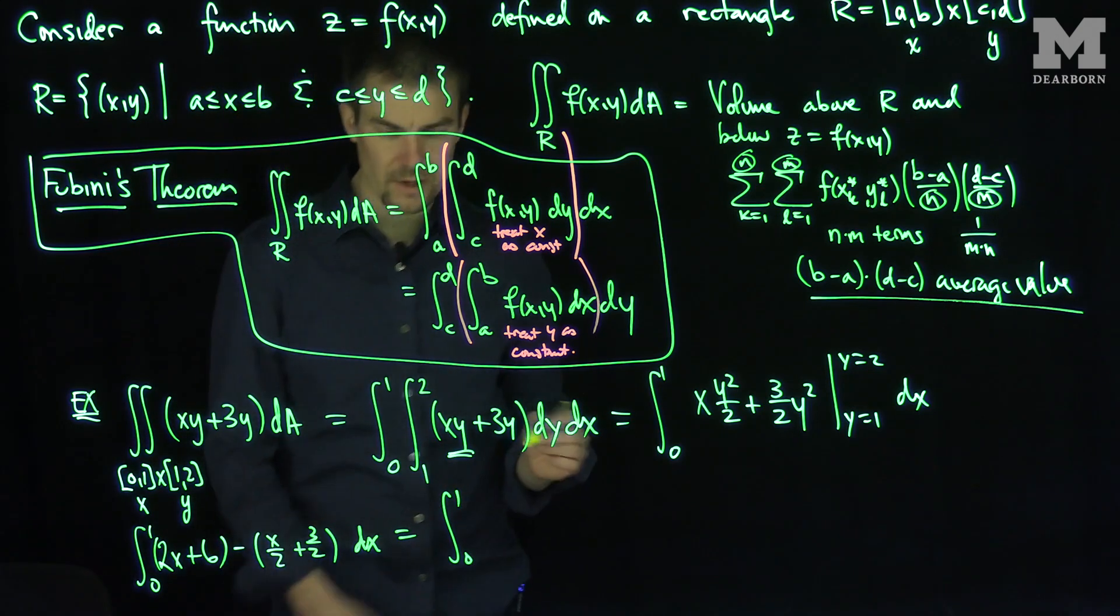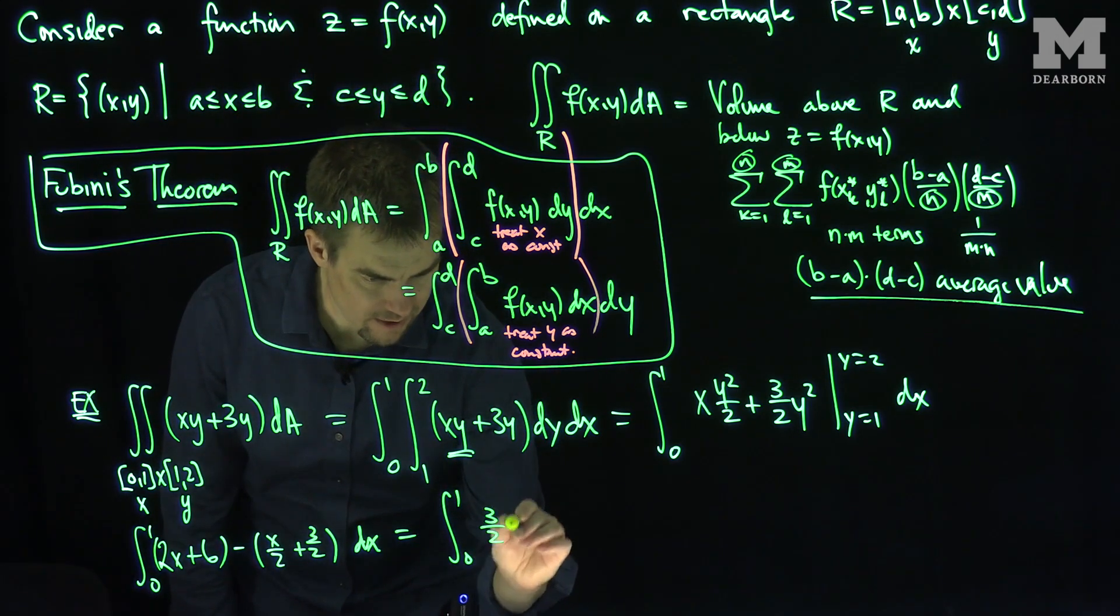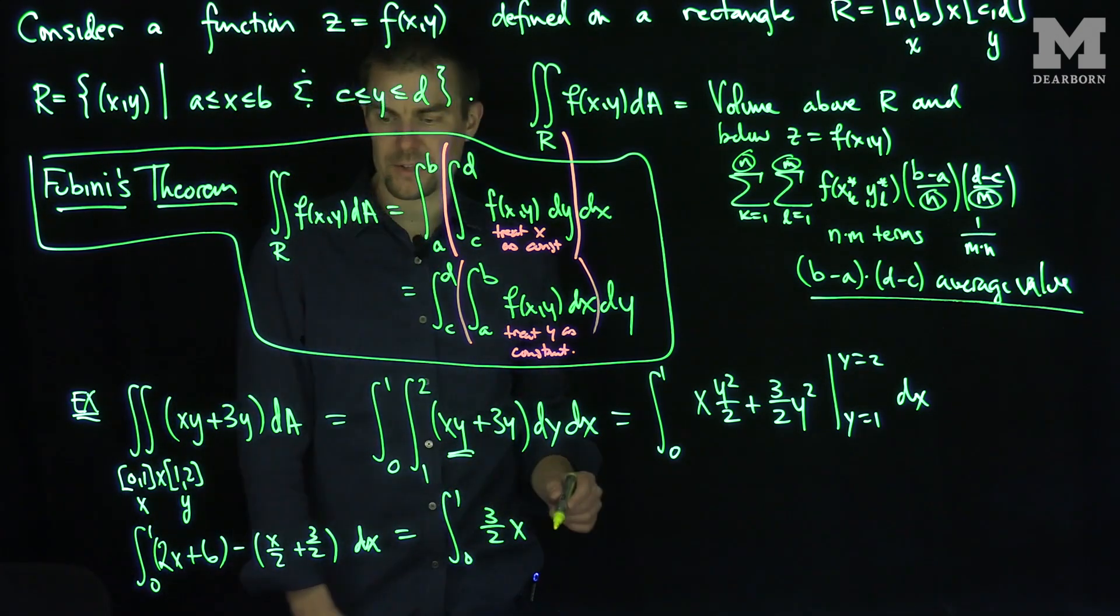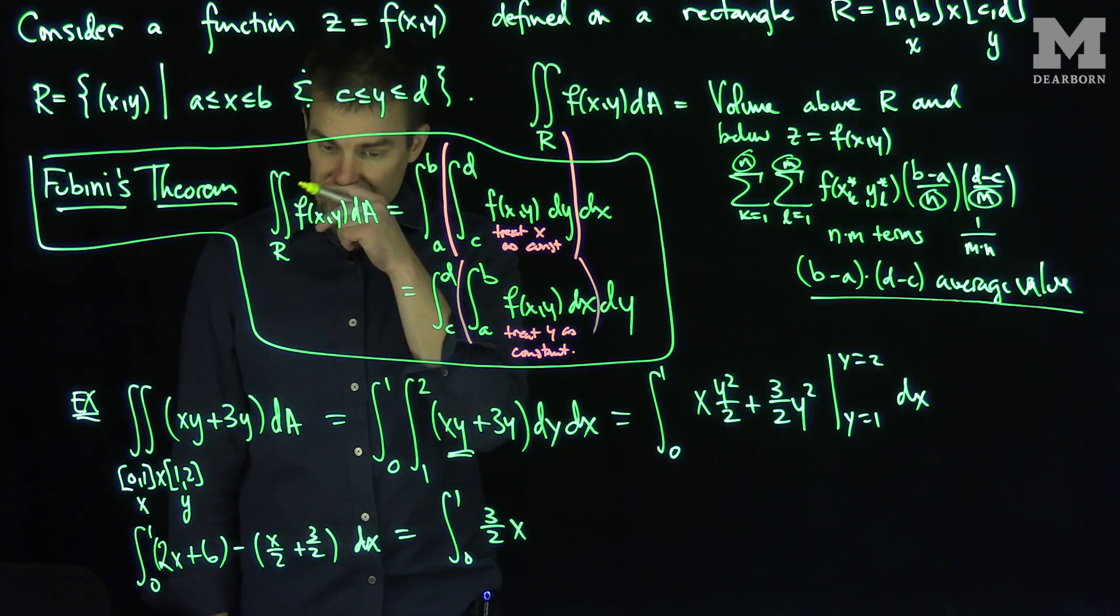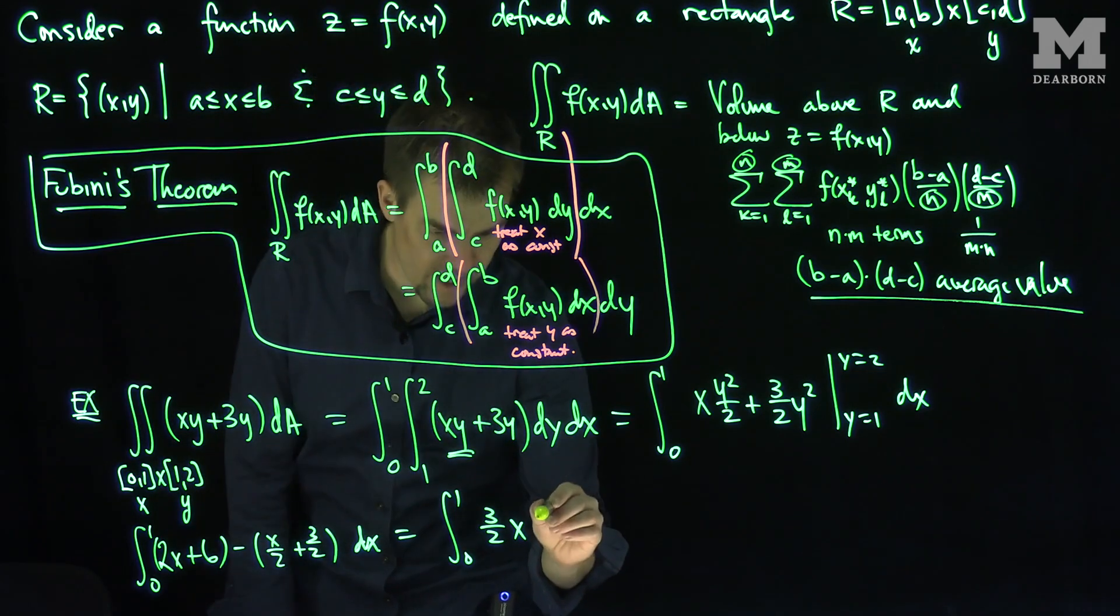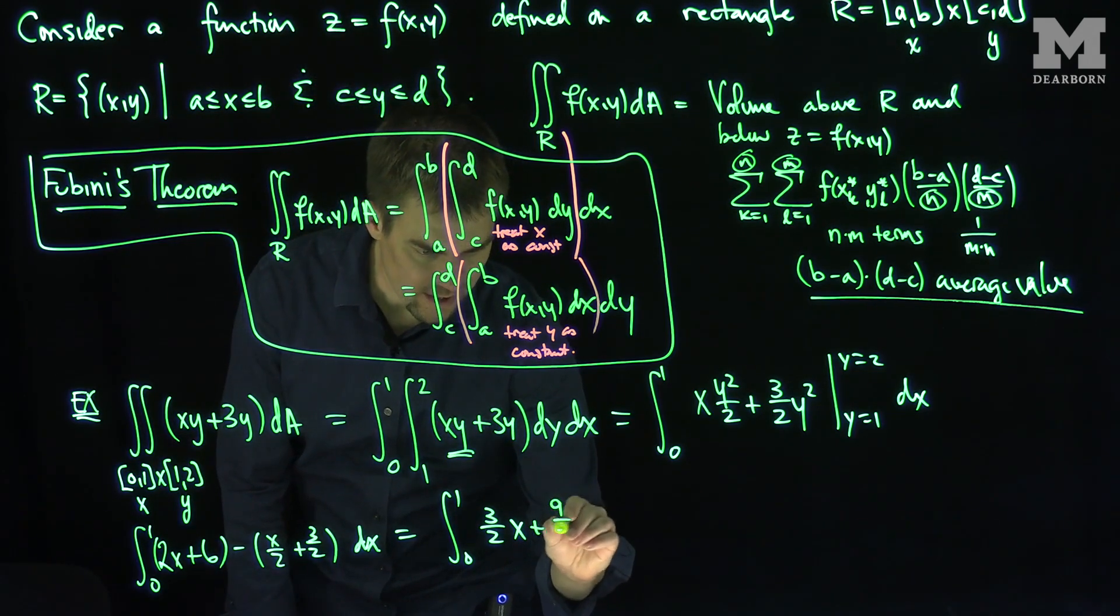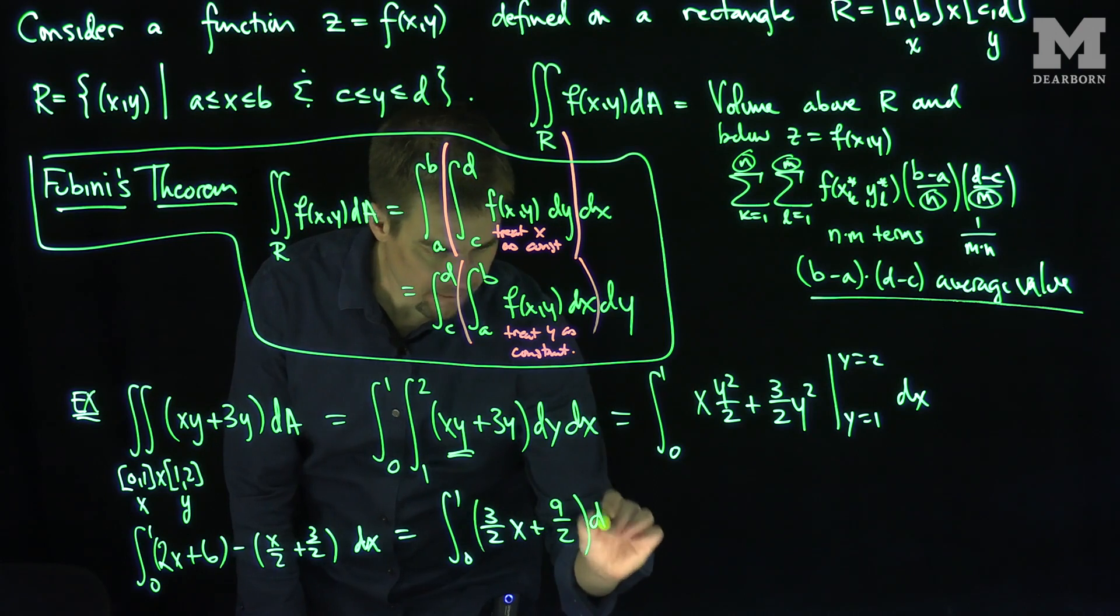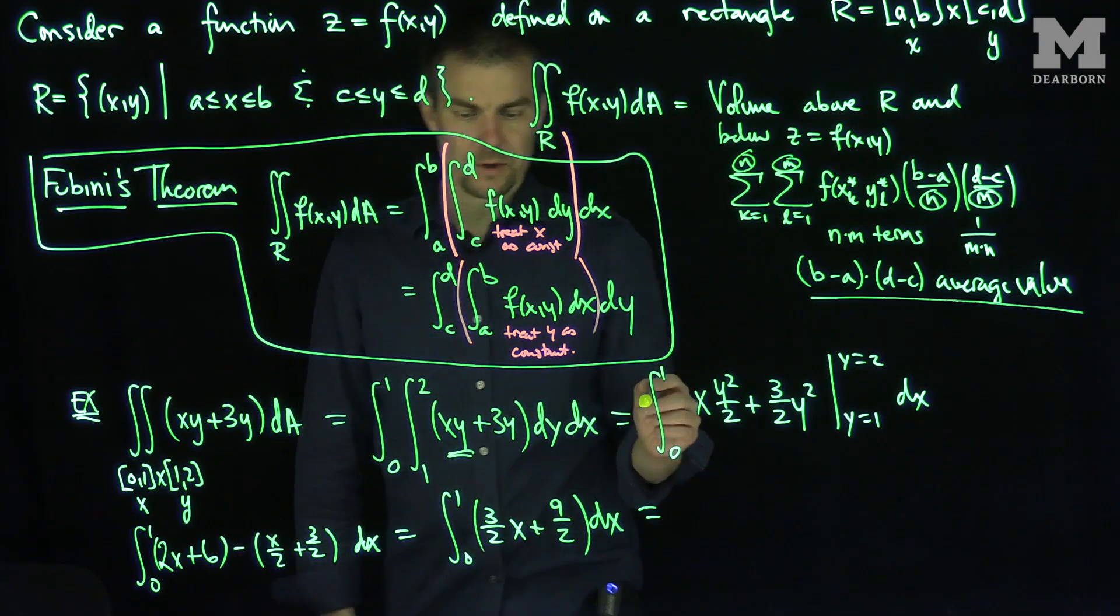And now let's count what we have. We're going to have 3 halves x, because 2x minus x over 2 is 3 halves x. Then I have 6, which is 12 over 2 minus 3 over 2, that's going to be 9 over 2. So I have plus 9 over 2 dx.